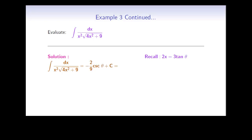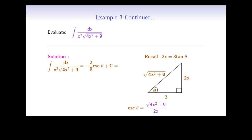The final step is to substitute back to x. The substitution was 2x equals 3 tan theta, so tan theta equals 2x/3. Drawing a triangle with opposite side 2x and adjacent side 3, the hypotenuse is the square root of 4x² plus 9. Therefore, cosecant theta equals hypotenuse over opposite, which is the square root of 4x² plus 9 divided by 2x. Substituting back, the final answer is negative square root of 4x² plus 9 over 9x plus C.